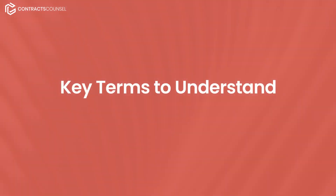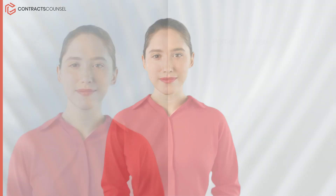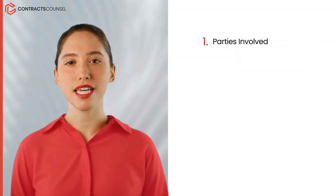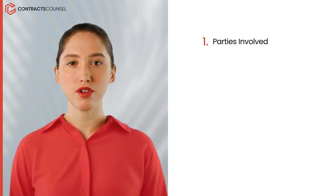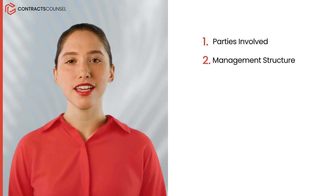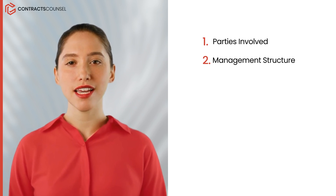Key terms to understand. Operating agreements contain many important terms that you should understand. Here are some key terms to look for. 1. Parties involved: ensure that the names and details of all members involved are correctly stated. Make sure the full legal names of the businesses or individuals are used. 2. Management structure: find the section that outlines whether the LLC will be member-managed or manager-managed.